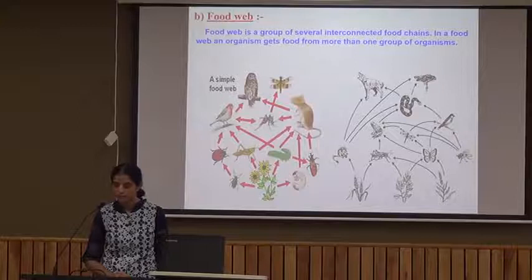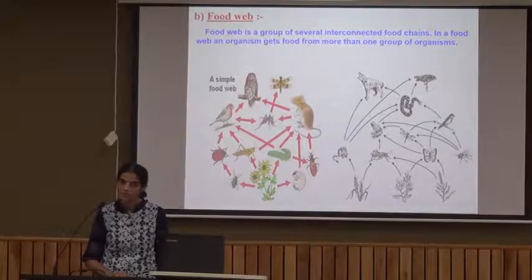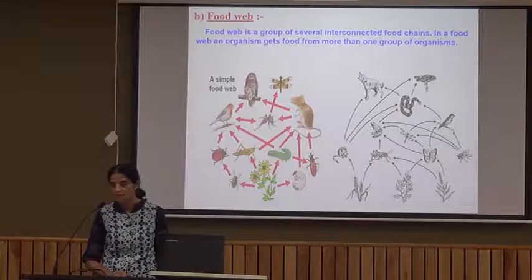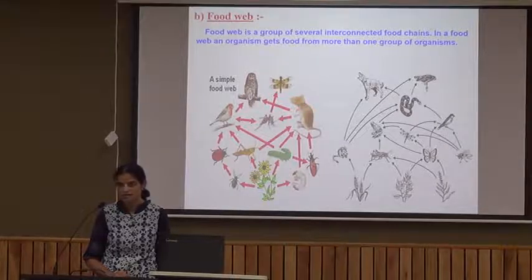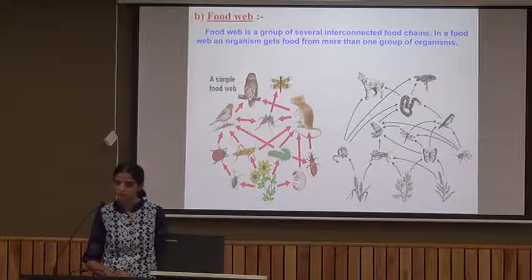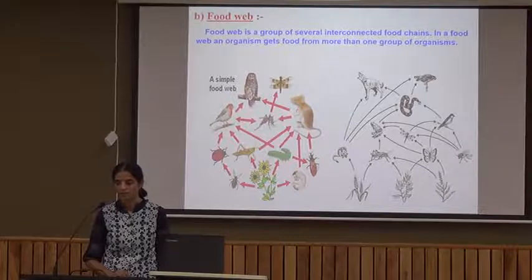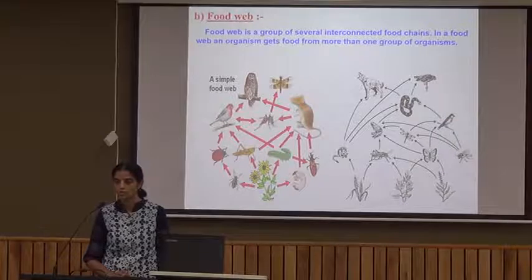Next is the food web, which is a group of several interconnecting food chains. In a food web, an organism gets food from more than one group of organisms, giving it more chances of survival. The organism is not dependent on a single food source — it may get food from more than one source.